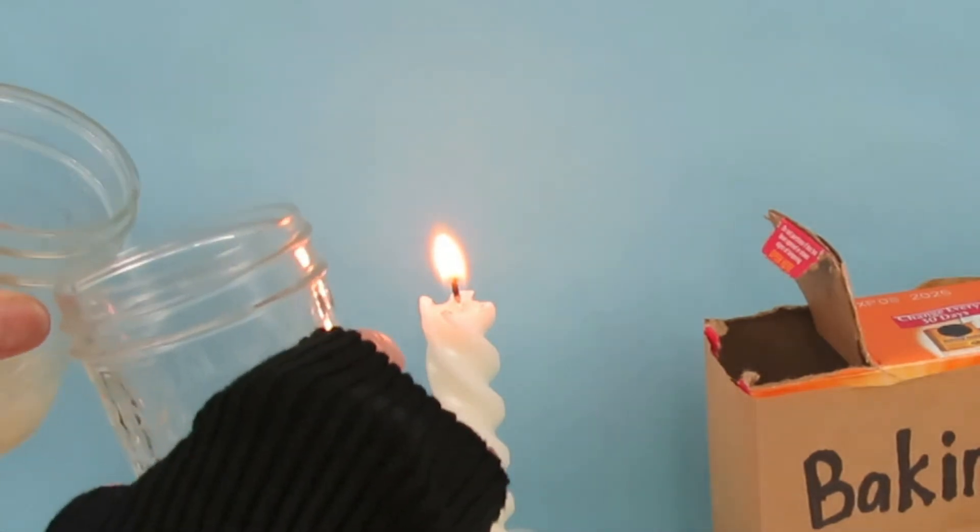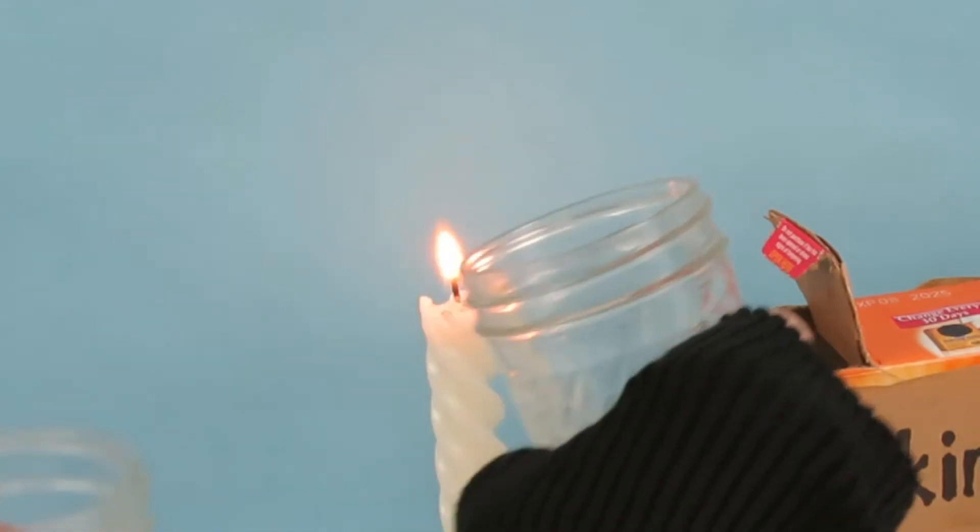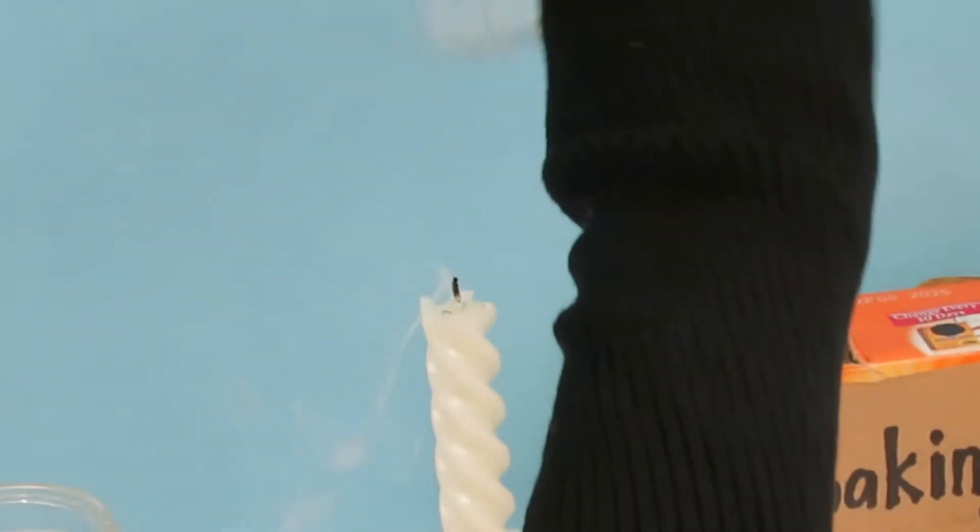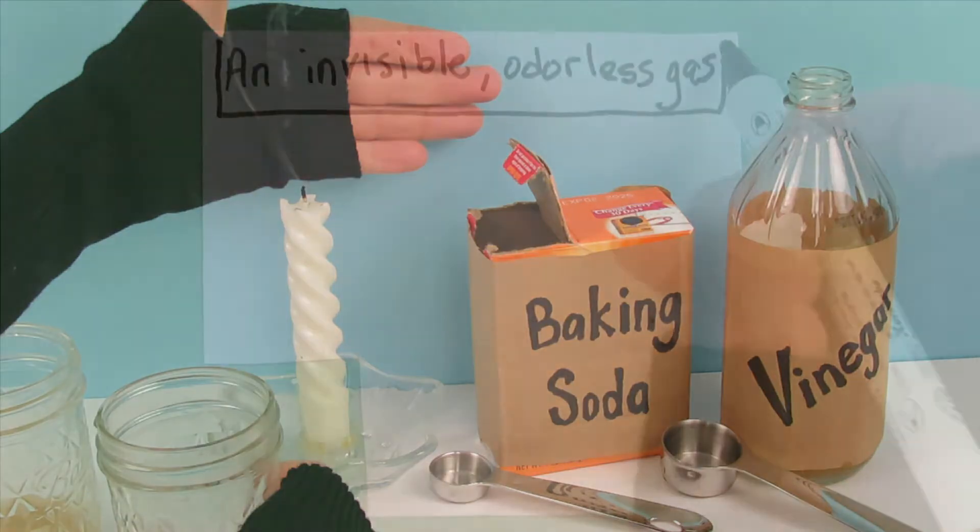Now pour the newly made CO2 into a clean glass. Pour the CO2 on the flame. It goes out. We didn't see the CO2, but we saw it put out the flame.